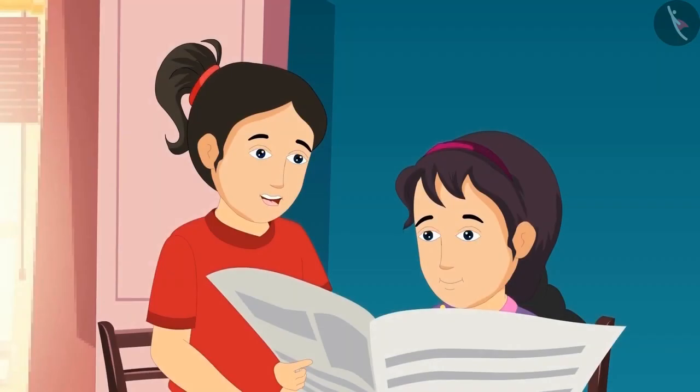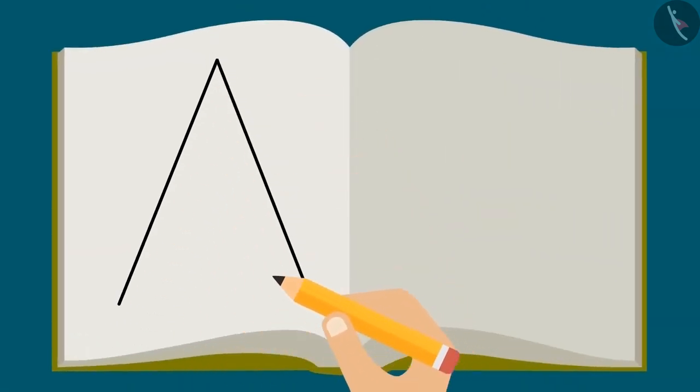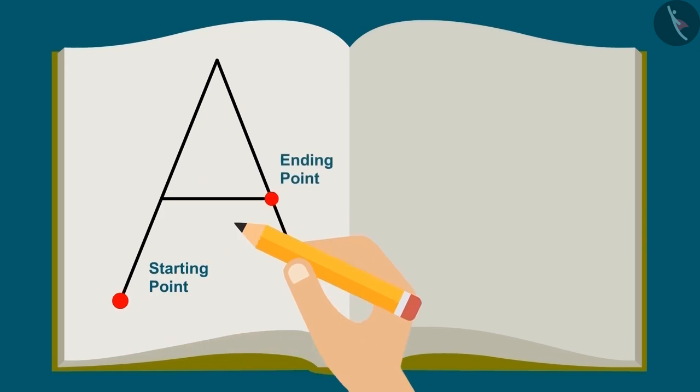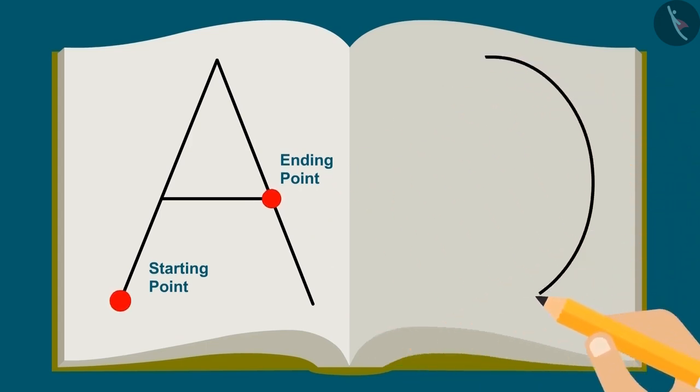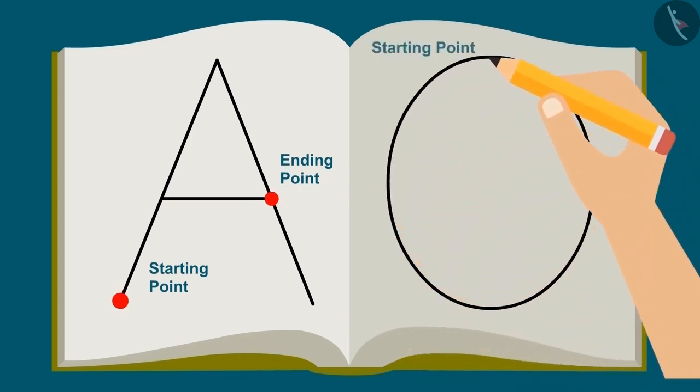The shape of A is closed from the top. Look here Reva, while writing the alphabet A on paper, the starting and ending point are different. And hence, it is called an open shape. And if we draw O on a paper, then the starting and ending points are the same. Hence, it has a closed shape.